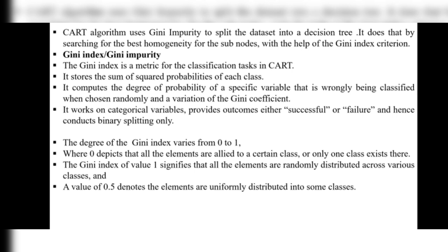The Gini index varies from 0 to 1. A value of 0 means all elements belong to a single class. A value of 1 signifies that all elements are randomly distributed across various classes. A value of 0.5 denotes that elements are uniformly distributed across some classes.